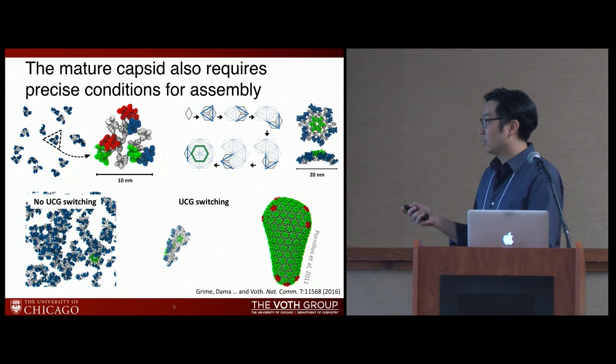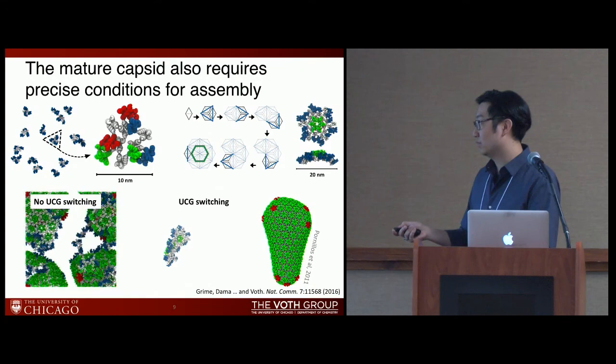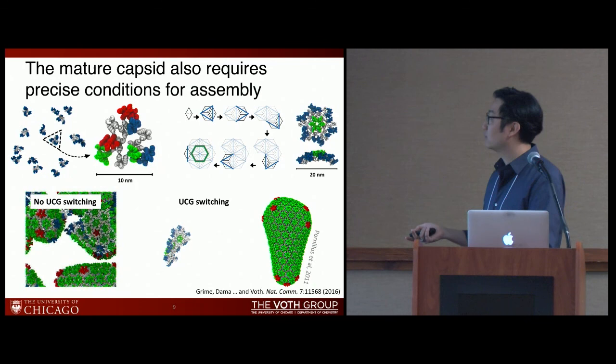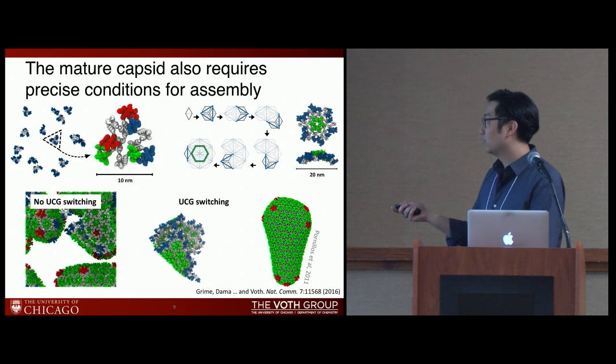If we assume all proteins are assembly-competent with no state switching and just let the simulation run, we see very rapid assembly — but they form misassembled, crazy jelly-roll shapes that don't resemble the proper capsid. However, when we introduce state switching to control the population of assembly-competent intermediates, we see very well-ordered and controlled self-correcting assembly similar to what we saw in the immature lattice.